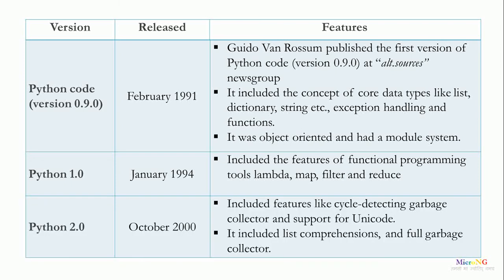Python 2.0 was released in October 2000. It included features like a cycle-detecting garbage collector, support for Unicode, list comprehension features, and a full garbage collector.